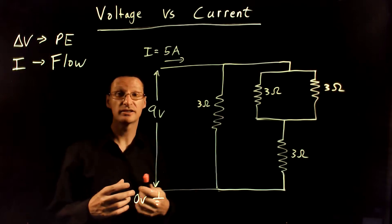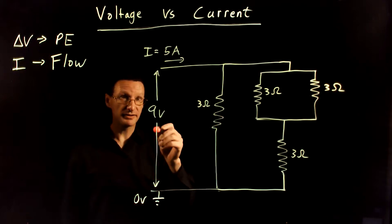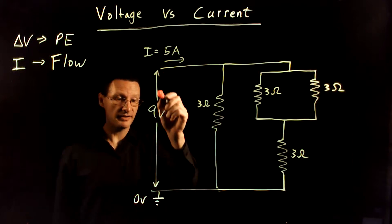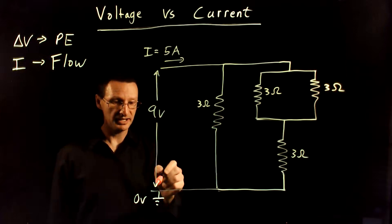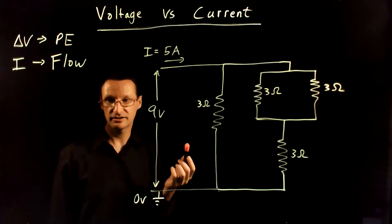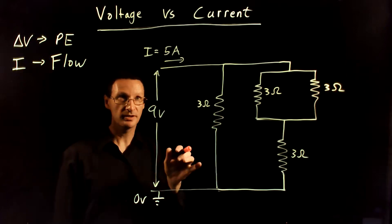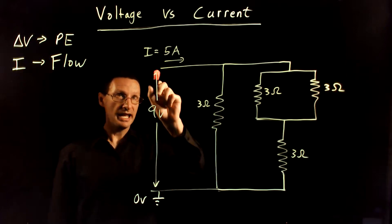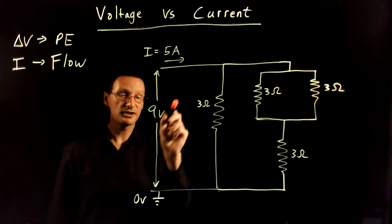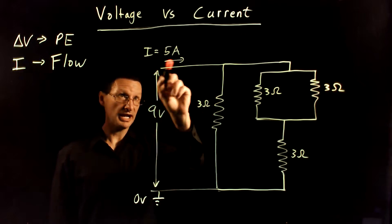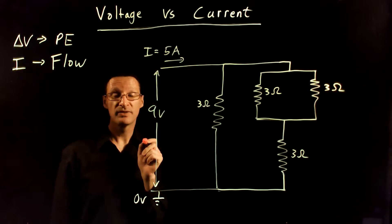Let's just talk about current in this circuit. Imagine we have a circuit here and there's a nine volt difference between the top and the bottom — it's connected to a battery somewhere, that's not important. And we have five amps of current coming out of the battery, through this wire here.